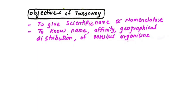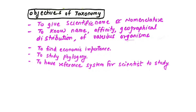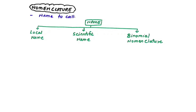The objectives of taxonomy are: first, to give scientific names (nomenclature); second, to know the name, affinity, and geographical distribution of organisms — for example, 'penguin' implies a specific geographic location; third, to find the economic importance of animals; fourth, to study phylogeny (evolution); and fifth, to have a reference system for different scientists.